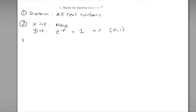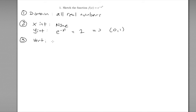Step three: asymptotes. For vertical asymptotes, these come from problems in your domain. Since our domain is all real numbers with no excluded points, we have no problem areas and therefore no vertical asymptotes.